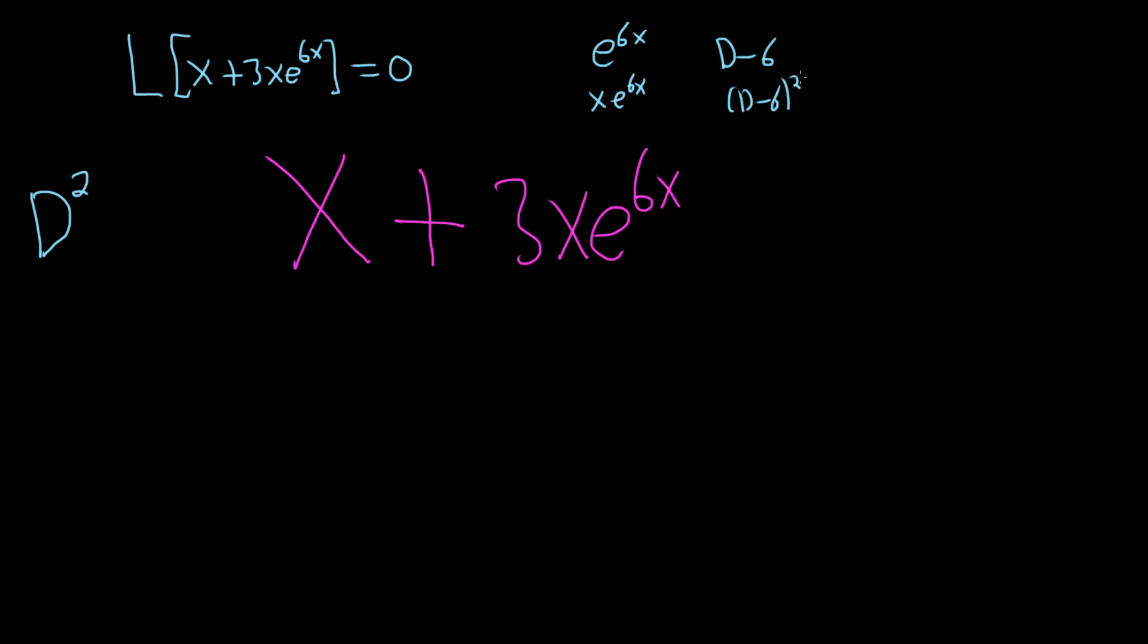So it's always 1 higher. So if there's a, say it was x squared, e to the 6x, then you would need d minus 6 cubed, etc.